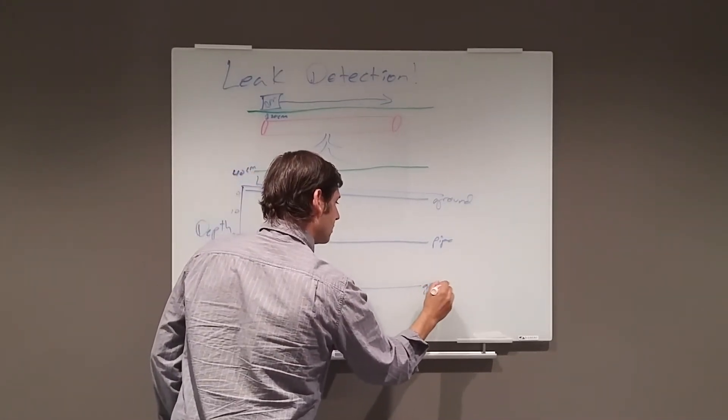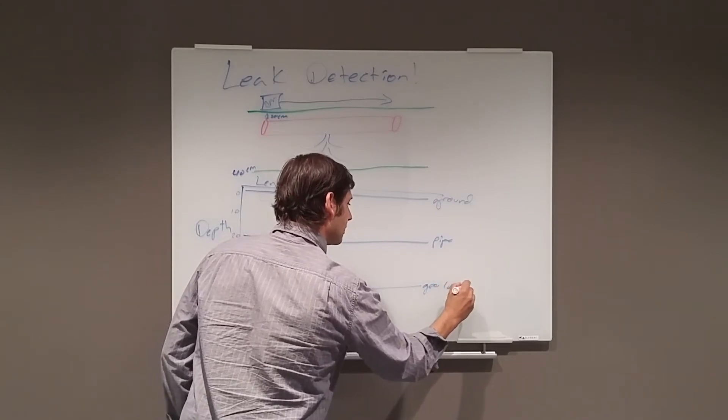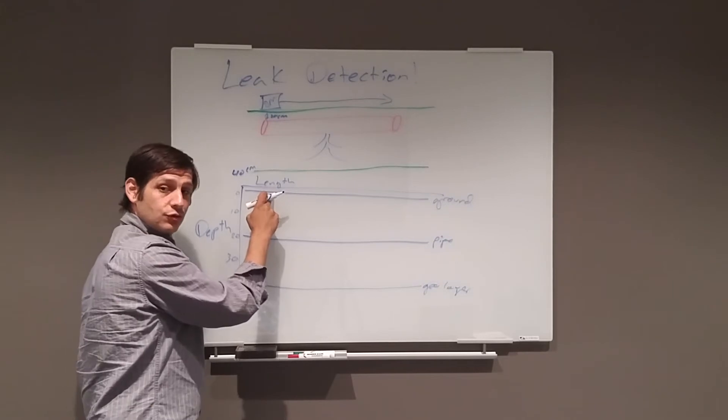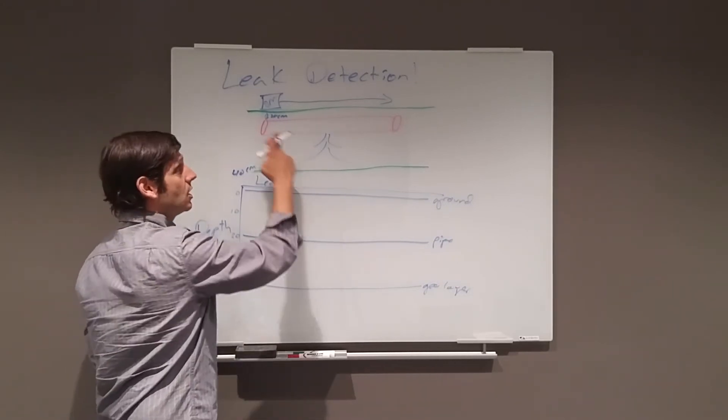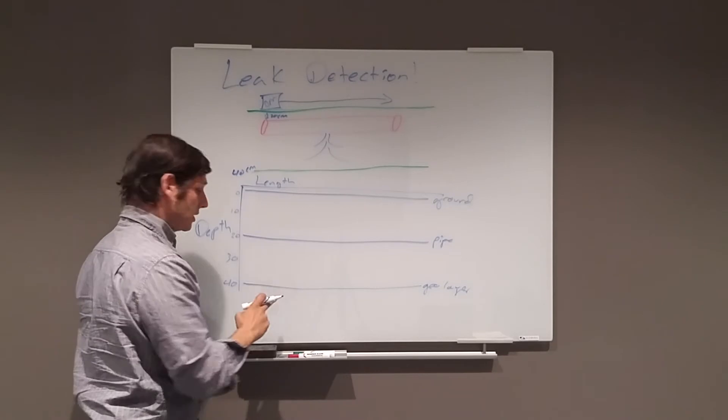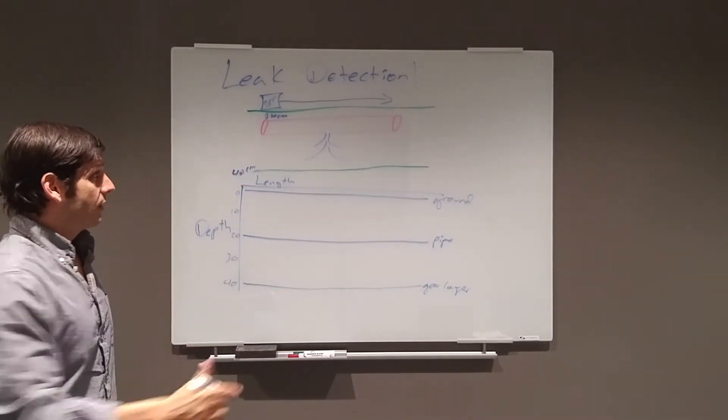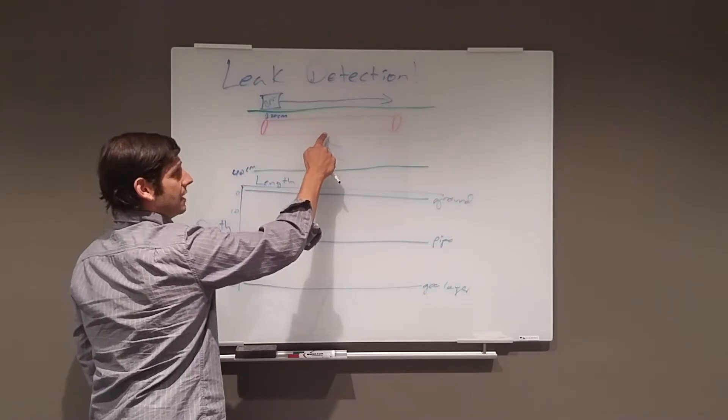So geological layer, and this is what you should see then. You should see a high amplitude response off of the ground surface, a high amplitude response off of your pipe, and then potentially a high amplitude response off of the next geological layer.